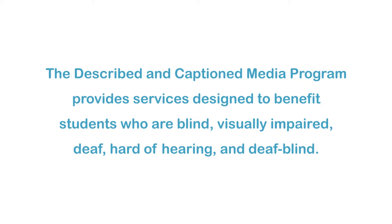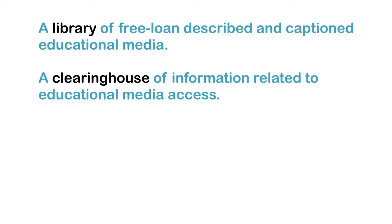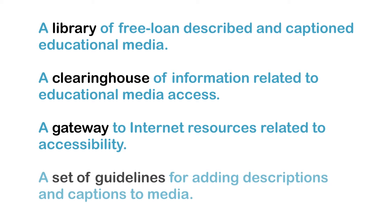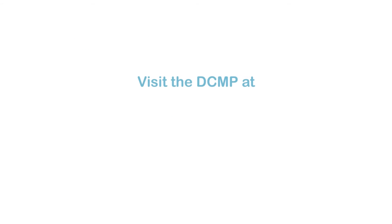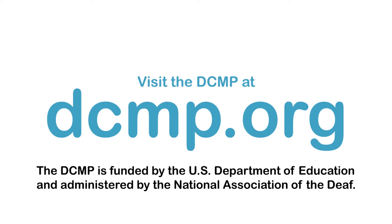The Described and Captioned Media Program provides services designed to benefit students who are blind, visually impaired, deaf, hard of hearing, and deafblind. These services include a library of free loan described and captioned educational media, a clearinghouse of information related to educational media access, a gateway to internet resources related to accessibility, and a set of guidelines for adding descriptions and captions to media. There are no user registration or service fees. Visit the DCMP at DCMP.org. The DCMP is funded by the U.S. Department of Education and administered by the National Association of the Deaf.